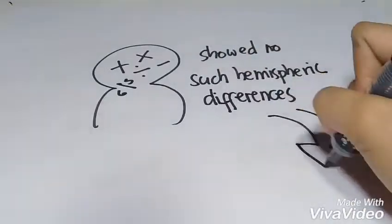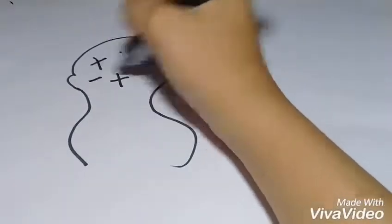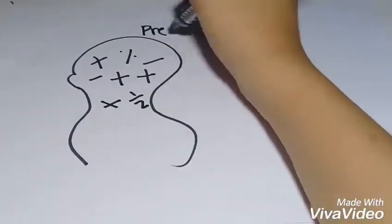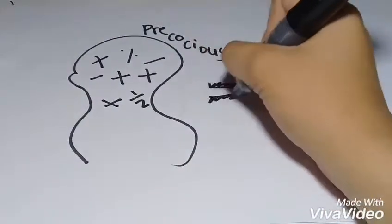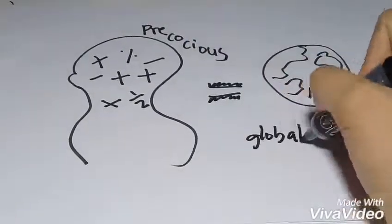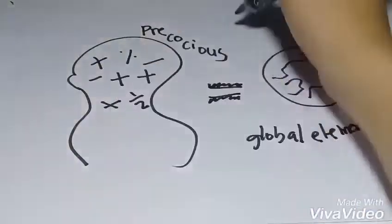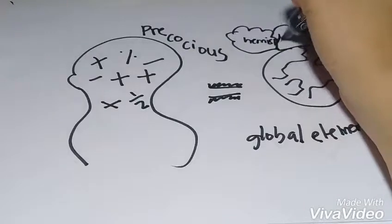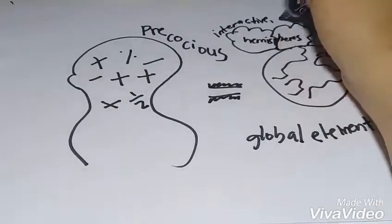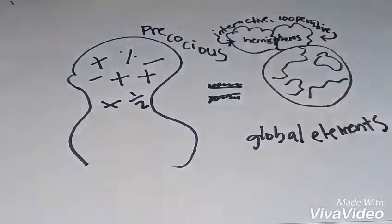However, the mathematically gifted boys showed no such hemispheric differences. Those who are precocious in math were equally good at processing global and local elements with either hemisphere, suggesting more interactive, cooperative left and right brain.